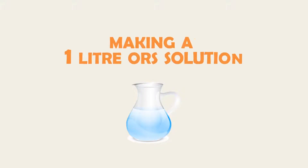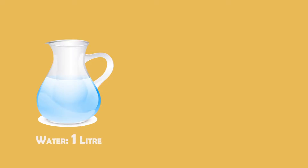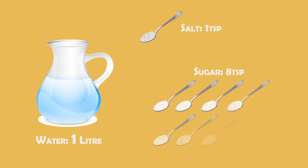You can also prepare an ORS solution at home. To make a 1-litre ORS solution: use 1 litre of clean, boiled and cooled water, 1 level teaspoon of salt, and 8 level teaspoons of sugar. Stir the mixture until the sugar dissolves. Store the solution in a clean, covered container.